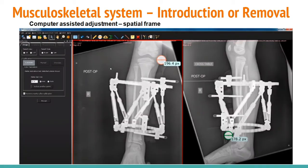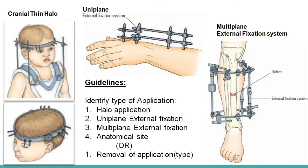The computer-assisted adjustment spatial frame consists of two rings and six rods called struts. The physician obtains radiological images and uploads them into designing software to plan fixation of the spatial frame on the defected or fractured site. After planning, the physician implements accordingly on the patient's defected area or fracture site.